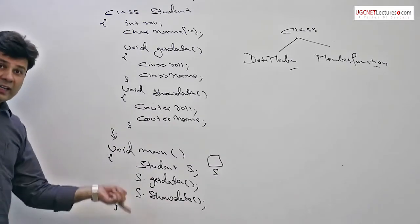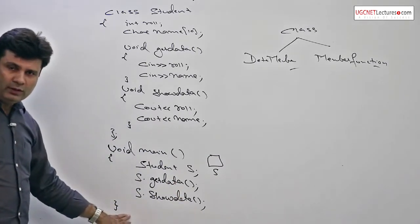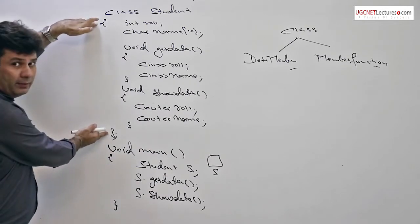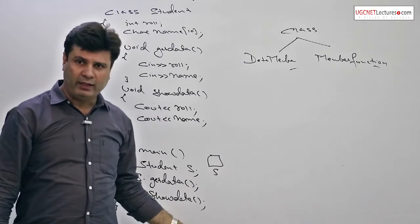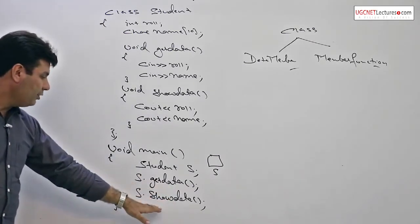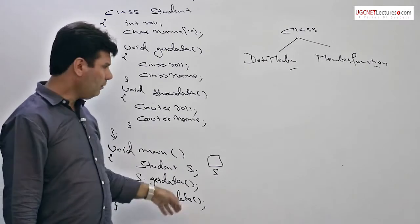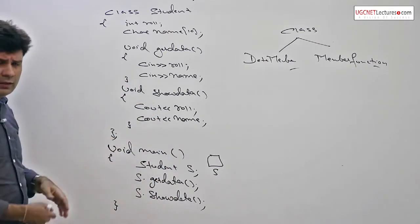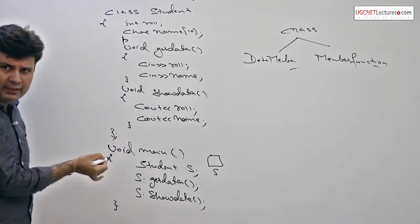Now the moment I provide an object reference, again the compiler will give error. The reason behind is compiler has found where exactly get data and show data are defined, but they are encapsulated within a class, they are hidden, they are private. So again you will have an error: get data and show data is not accessible. Now what to do? Our requirement in order to input data, in order to show data, I need to define both of these two functions, get data and show data, publicly within a class.